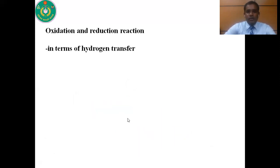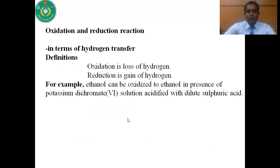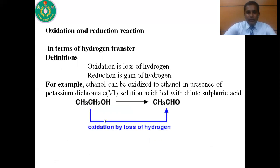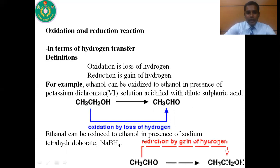In terms of hydrogen transfer, oxidation is loss of hydrogen and reduction is gain of hydrogen. For example, ethanol can be oxidized to ethanal in the presence of potassium dichromate and sulfuric acid. Here hydrogen is removed from ethanol, so it is called an oxidation reaction. Conversely, ethanal can be converted into ethanol by using sodium tetrahydroborate. Here a hydrogen atom is added to ethanal to form ethanol. As hydrogen is added to the substance, this is called a reduction reaction.